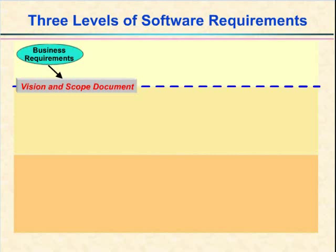All projects need some kind of a strategic guiding document like this. They might not call it a vision and scope document — sometimes people create a project charter for this purpose, and in the commercial world, people often discuss a market or marketing requirements document. The business requirements get all project stakeholders aligned in the same direction, but they don't provide sufficient detail for developers to know what to build.